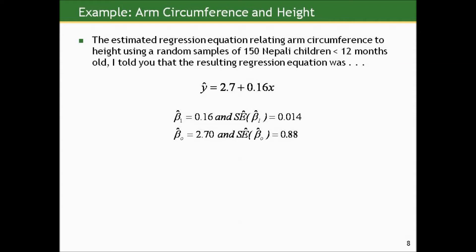For this Nepali children height example, the estimated regression equation was y-hat equals 2.7 plus 0.16 times height, where beta-one-hat is 0.16. The standard error, which we'll show you in a minute, comes from Stata and is 0.014. Similarly, the intercept is 2.7 as an estimate with a standard error of 0.88.